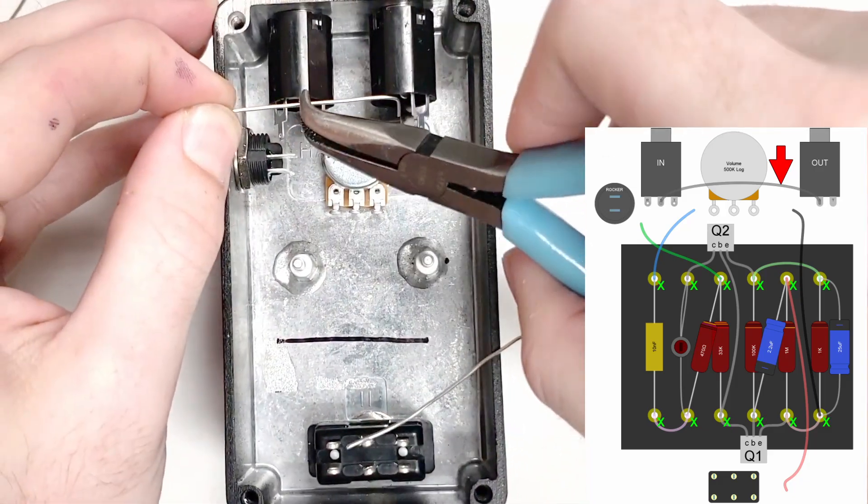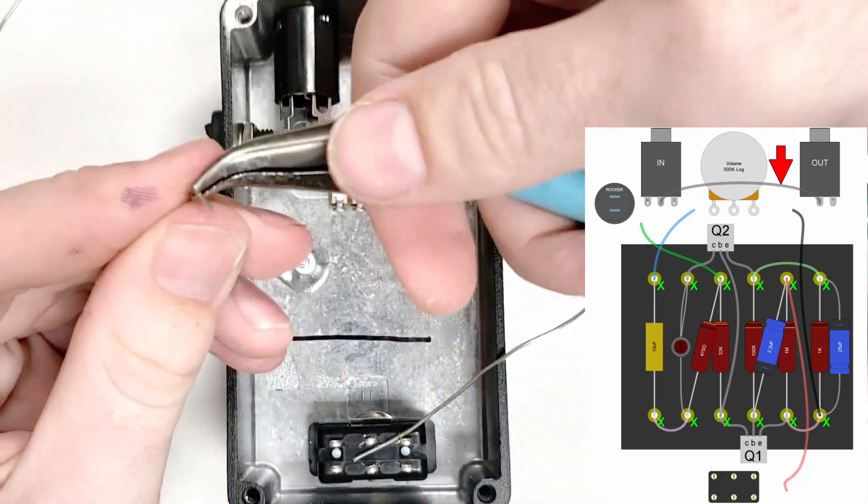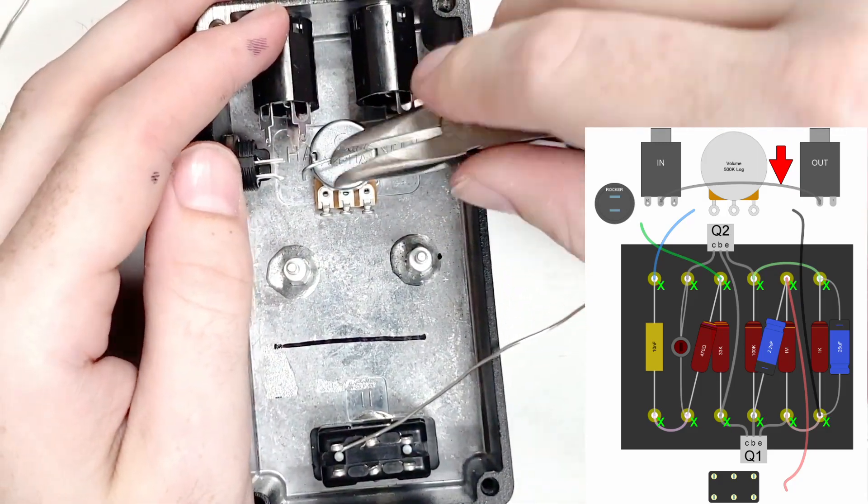First, we'll cut some bus wire for the connection. By eye and with a pair of pliers, I'm putting two 90 degree bends in it spaced roughly at the same distance as the jack sleeve lugs, and cutting the bent leads short. Adjust the bends as needed and drop it into the two lugs, then solder it into place.